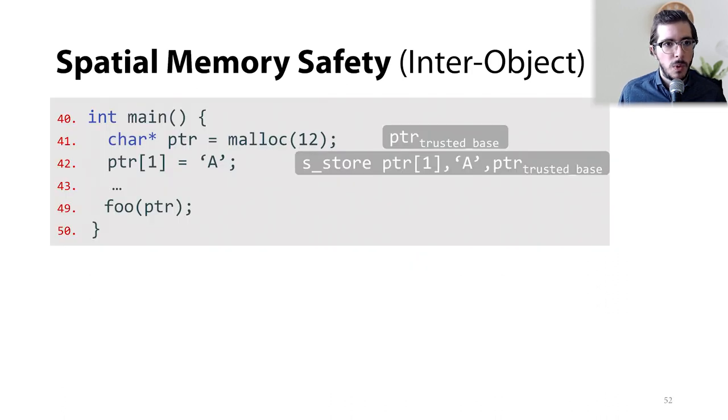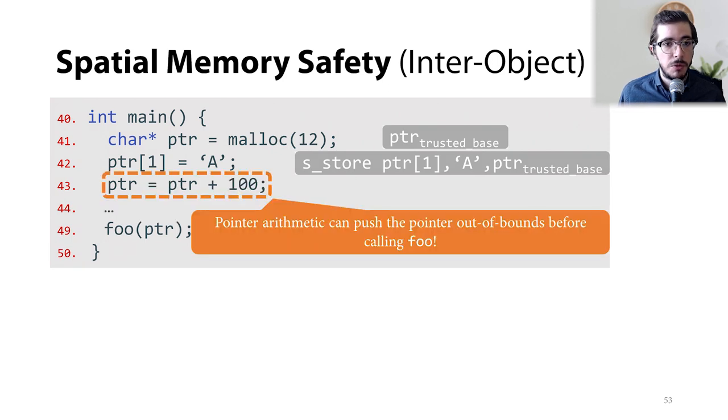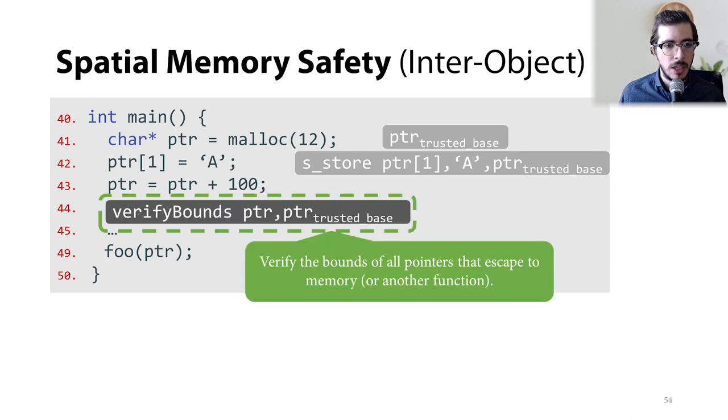Now, one might ask, what is going to happen if a pointer arithmetic operation in the main function pushes the pointer out of bounds before passing it to foo? In this case, foo will then receive an out-of-bounds pointer and will compute a wrong trusted base. To avoid such problematic situations, we always verify the bounds of all pointers that escape to memory or to another function. We do so with a simple instruction that takes the escape pointer and its original trusted base as inputs. If the pointer is already out-of-bounds, we flag a violation at line 44 and it will not be passed to foo. If the pointer is in-bounds, we are guaranteed that foo will receive a valid input. This way, we can cover inter-object spatial memory safety.